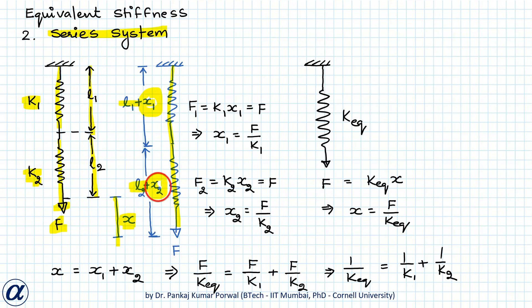Then force in first spring will be k1x1 and force in second spring will be k2x2. Now if I consider free body diagrams of the springs separately then I can find that both F1 and F2 will be equal to F, so that gives me x1 equals to F upon k1 and x2 equals to F upon k2.